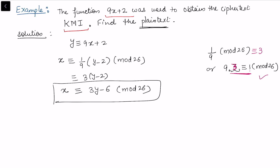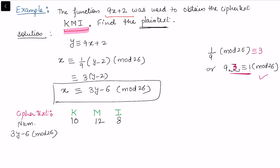We know the ciphertext is 'kmi'. Writing the numerical digits from the standard table: K=10, M=12, I=8. Now applying the deciphering function 3y − 6 mod 26: for K (y=10): 3×10 − 6 = 30 − 6 = 24 mod 26. For M (y=12): 3×12 − 6 = 42 − 6 = 36, and 36 mod 26 = 10... giving remainder 4 mod 26.